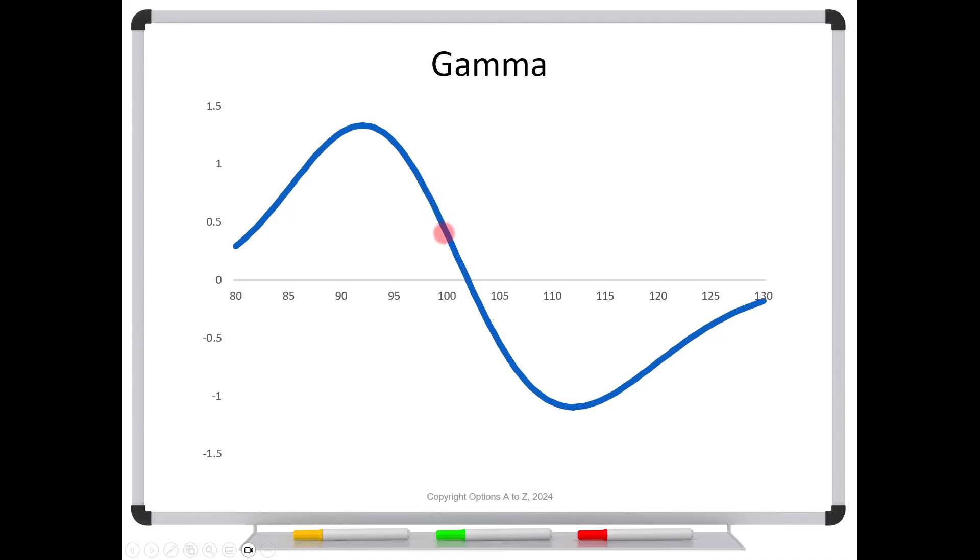Now notice that if we go from positive gamma to negative gamma, we have to, at some point, cross through zero. At some point, we have to have no gamma, and that looks like it occurs roughly at 102½. And so as that stock continues to rise, what happens? Now we're into negative gamma.